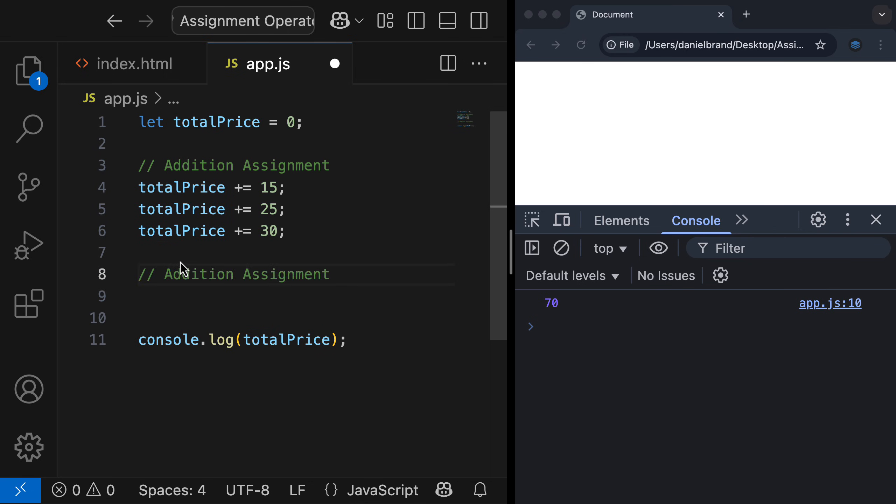I'll refresh and you can now see the value of totalPrice is 70. Okay, let's now go do an example of subtraction assignment. For this, on the e-commerce application, let's say the user had a coupon for $10. So we need to subtract $10 from the total price. So we would do totalPrice minus equals 10. I'll refresh and you can see the value of totalPrice is now 60.